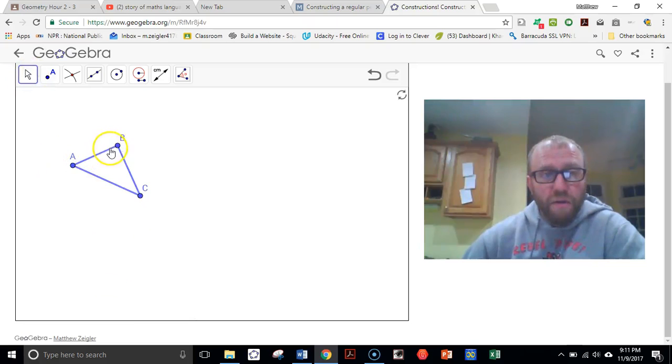Triangle A, B, C. There it is. I can move it at all three corners. And I'm going to recreate this triangle over here on the screen.